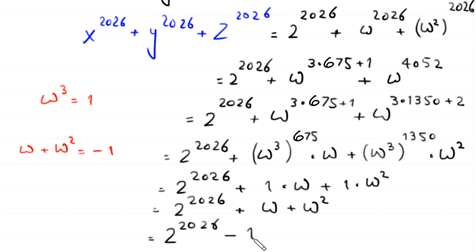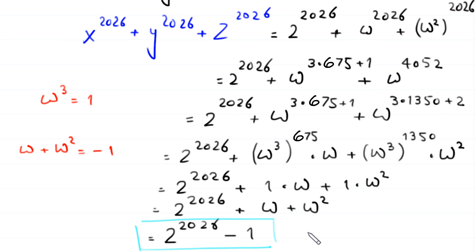So the required value of x²⁰²⁶ + y²⁰²⁶ + z²⁰²⁶ is 2²⁰²⁶ - 1. This is the final answer to this problem.